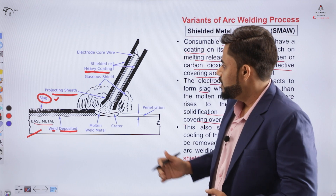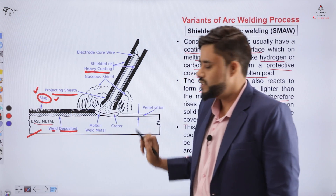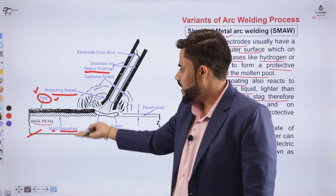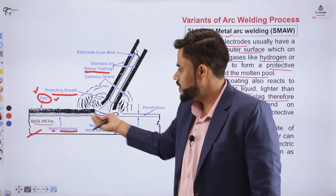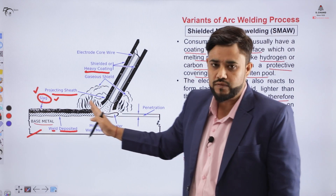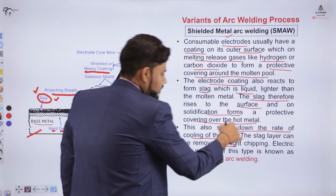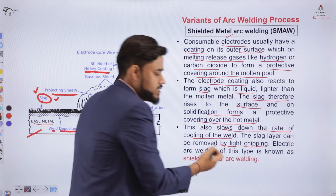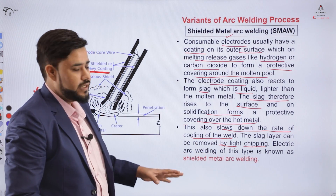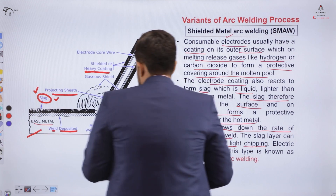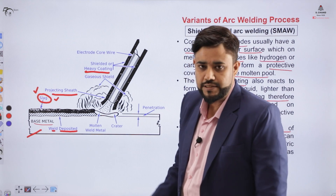In the slag formation process, the electrode coating melts and produces a layer of liquid slag on the surface of the base metal. As it rises and solidifies, it acts as a protective layer over the molten weld metal. This slows down the rate of cooling of the weld. The solidified slag layer is then removed with light chipping using a chipping hammer.